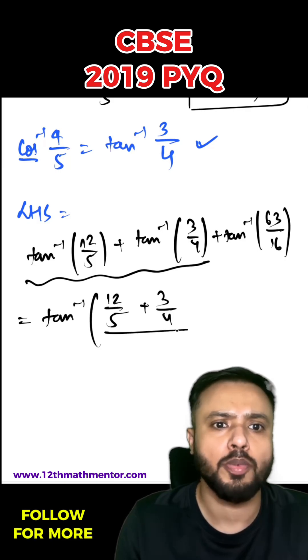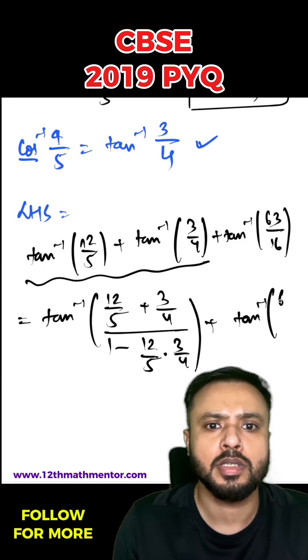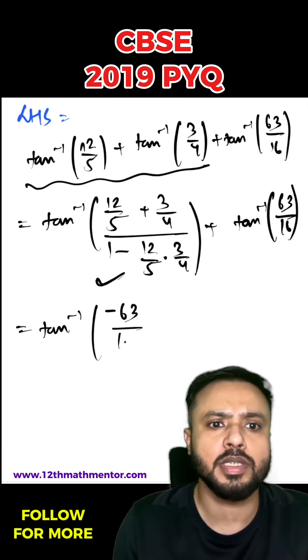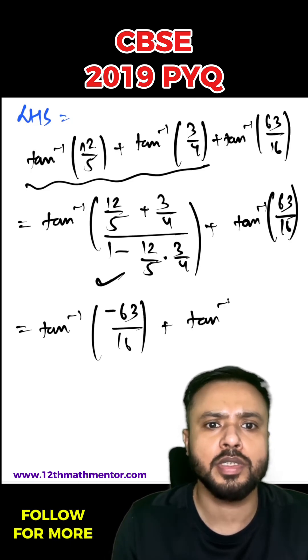When you simplify this you're going to get tan inverse negative 63 by 16 plus tan inverse 63 by 16. Now again I can use the formula of tan inverse A plus tan inverse B.